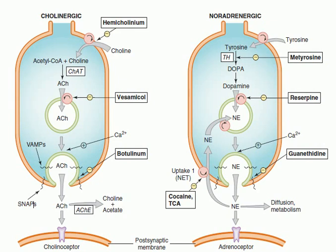Welcome again friends. Today we will look briefly at what is going on with the cholinergic receptors and the adrenergic receptors. Let's start with the cholinergic receptors. These are receptors used in the parasympathetic nervous system, and they use acetylcholine as a neurotransmitter for the activation of the postsynaptic membrane in order to continue the nerve impulse.